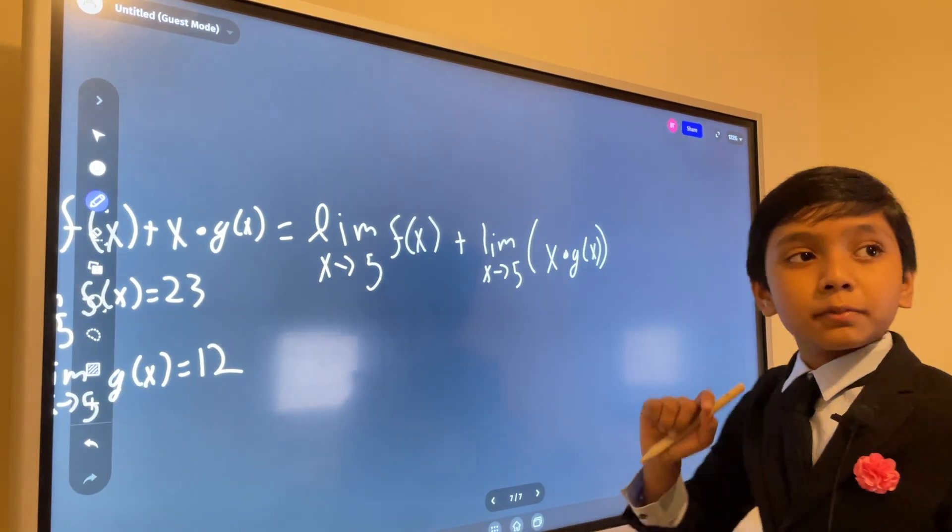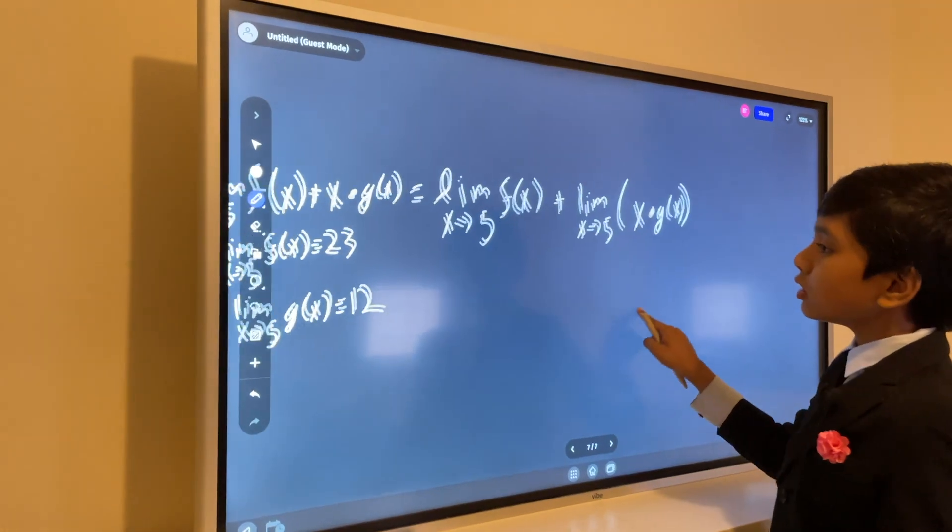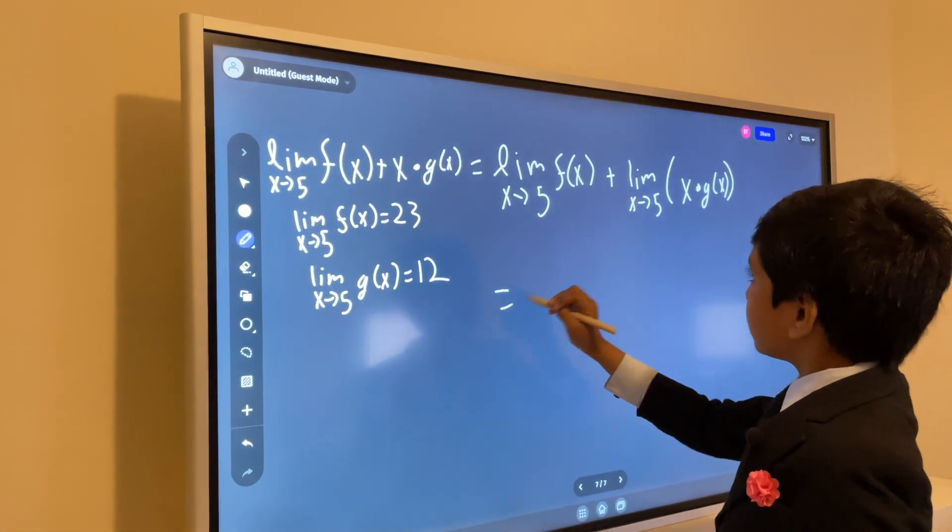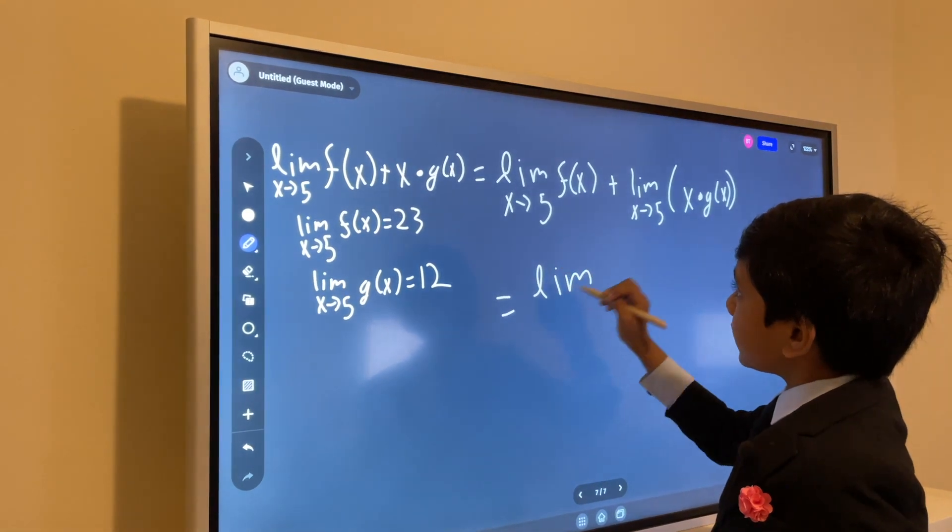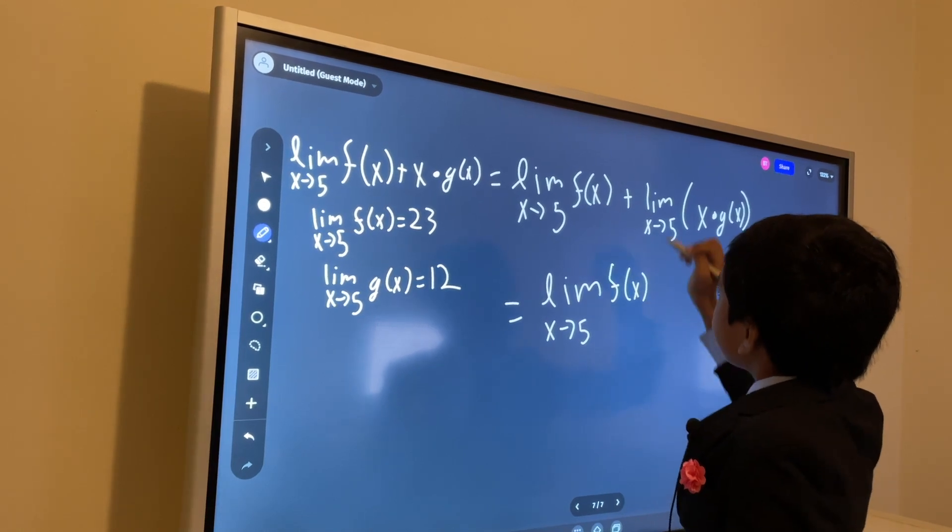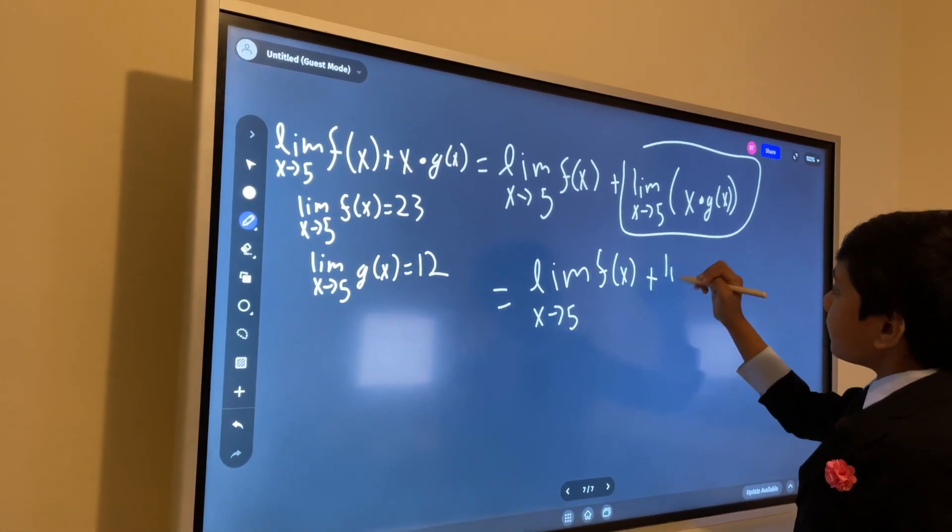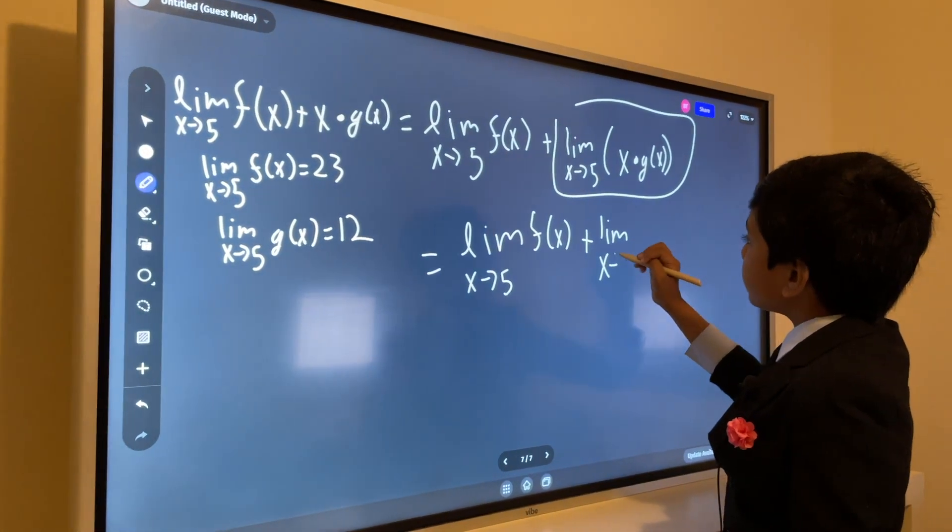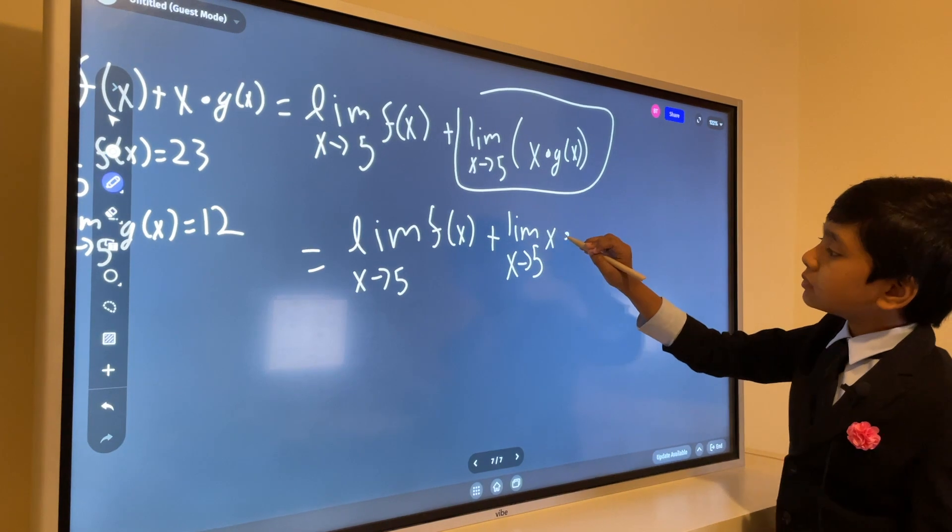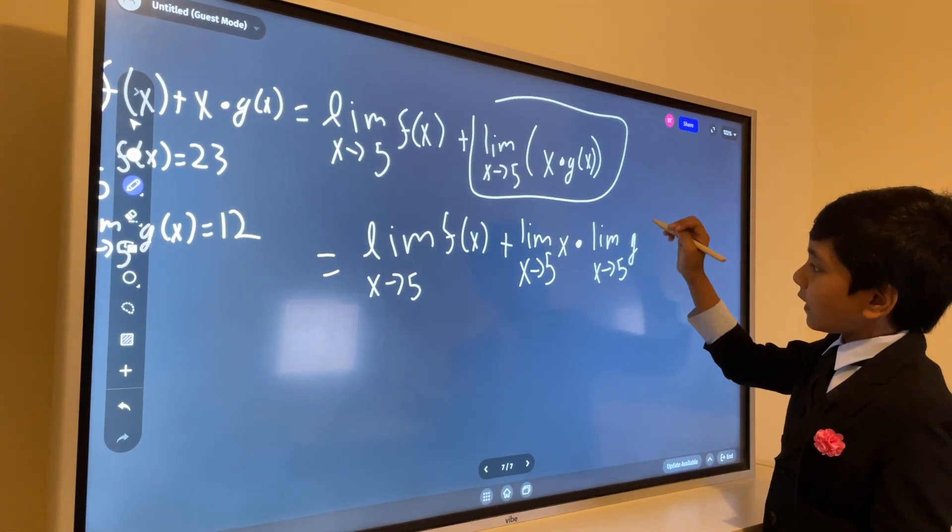And we can use the multiplication rule, or rule number 2, we stated, to say that we can bring everything else down, but we can reform this second part over here as the limit as x approaches 5 of x times the limit as x approaches 5 of g(x).